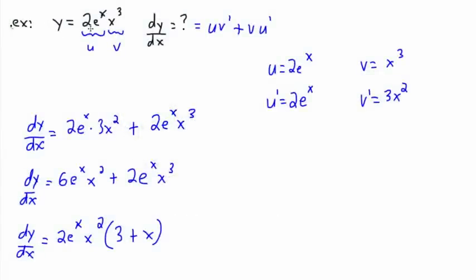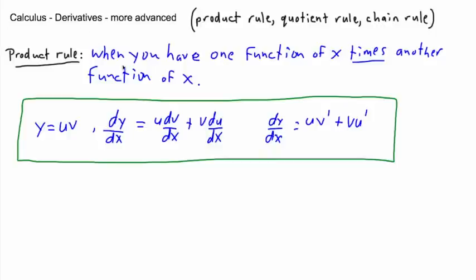So in the last example we just looked at how to deal with a product rule. The product rule said if we have two things multiplied by each other, two functions of x, then we can just say u v primed plus v u primed. If the first one's called u, the second one's called v.